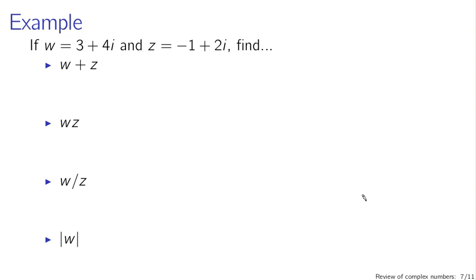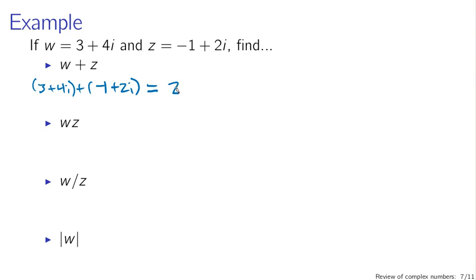Let's do an example. If w is 3 plus 4i and z is minus 1 plus 2i, let's find w plus z. Well, w plus z is 3 plus 4i plus minus 1 plus 2i. That's straightforward: 3 minus 1 gives real part 2, and 4i plus 2i gives imaginary part 6i. So w plus z equals 2 plus 6i.